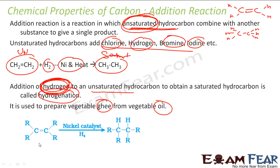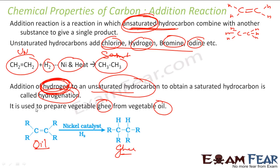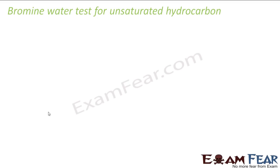For example, this process is used to get vegetable ghee from vegetable oil. Vegetable oil is unsaturated; in the presence of nickel as catalyst, you add hydrogen and you get ghee, which is saturated. This process is called hydrogenation, and it is used industrially to get ghee from oil.